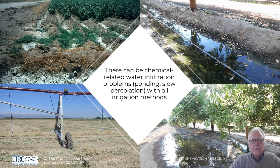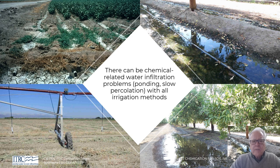I started looking at infiltration problems in the 70s when we began putting out drip irrigation. In some places the water just stood on the surface of the soil. That problem doesn't disappear with subsurface drip irrigation — water may just come right to the surface and stand there. It can also be a problem with sprinklers, especially high-application sprinklers such as pivots and linear moves on their outer edges.